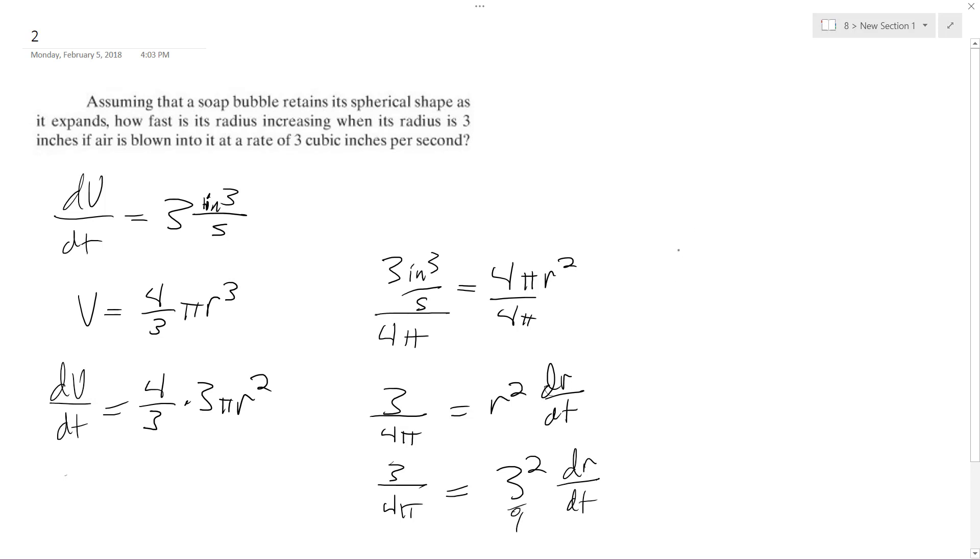All right, so then we get dr/dt is equal to three over nine times four pi. So you can cancel this down, this becomes one, this becomes three. And we get dr/dt is equal to one over twelve pi, or approximately 0.027 inches per second.